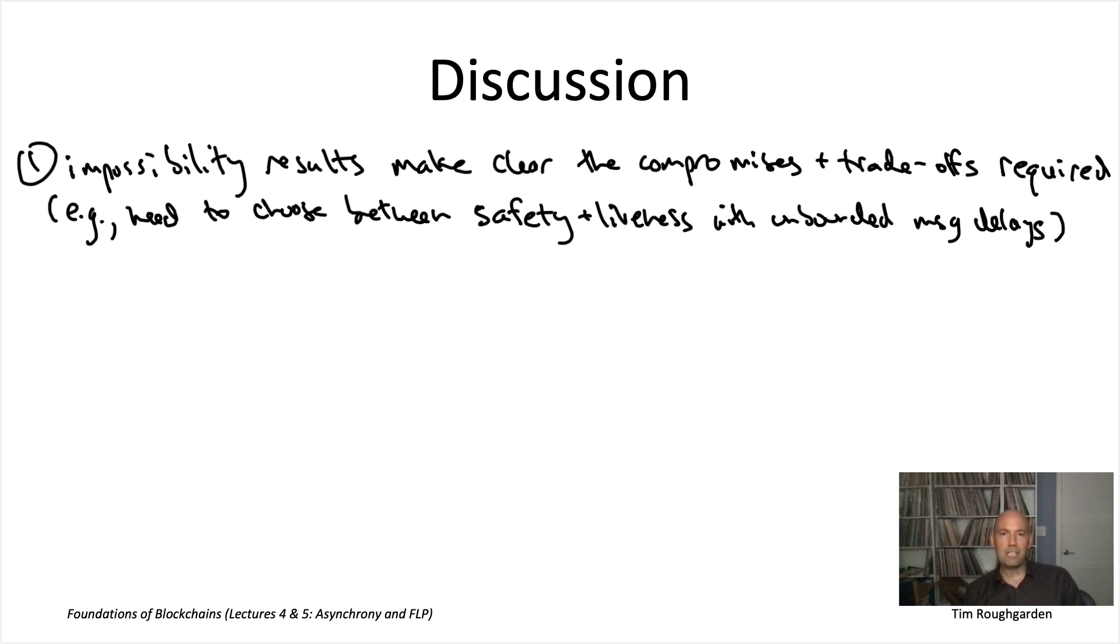If you think about the state machine replication problem, the SMR problem, where we wanted to have a bunch of nodes and keep them in sync, meaning they always have identical local histories. That's consistency. But we also wanted liveness, that when there are transactions that can be added, eventually they should be added. The FLP impossibility result says in the asynchronous model, we cannot accomplish state machine replication with both consistency and liveness. One of them must be given up.